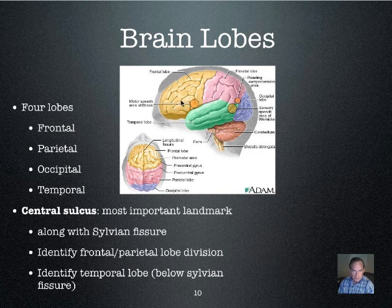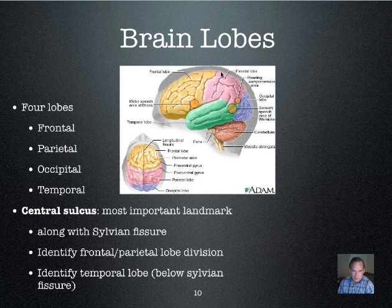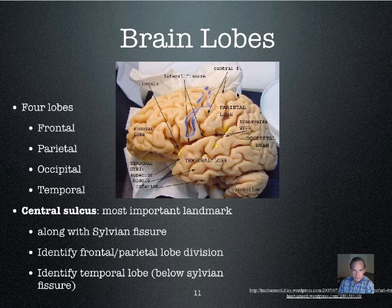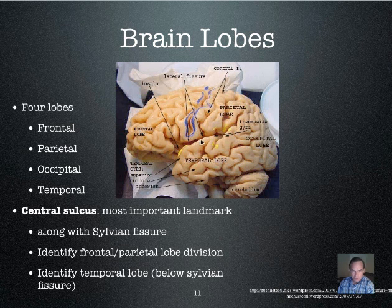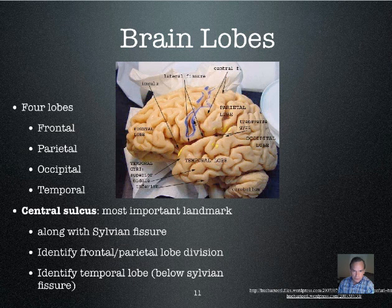Here again we have a different diagram still illustrating that the central sulcus divides the frontal lobe from the parietal lobe, and that the pre-central gyrus is motor cortex while the post-central gyrus is sensory cortex. Here is the actual human brain with parietal and frontal lobes labeled, the sylvian fissure, and the central sulcus — that crevice separates motor cortex of the frontal lobe from sensory cortex of the parietal lobe.